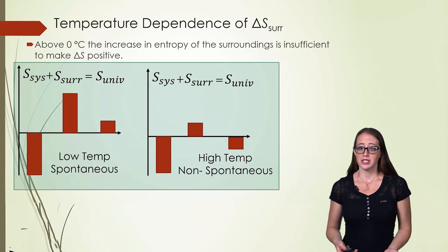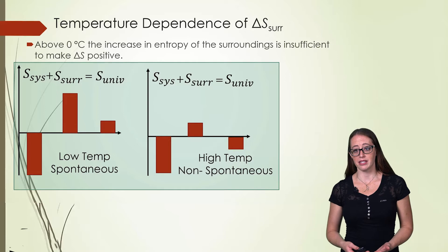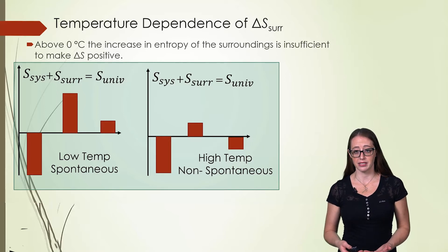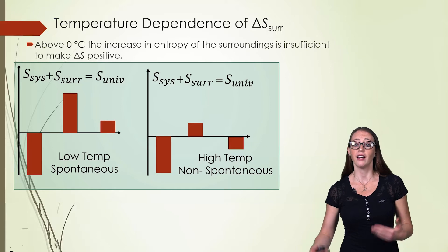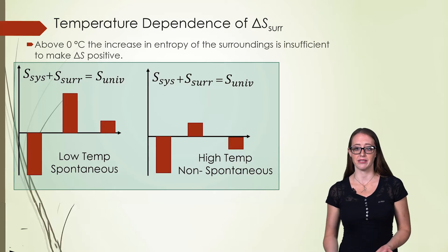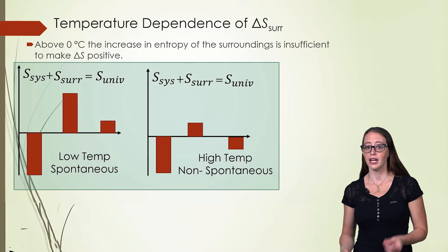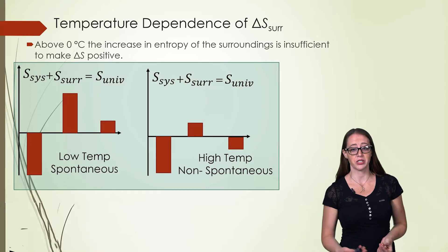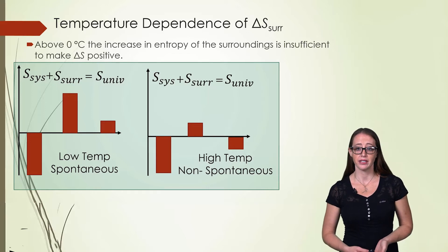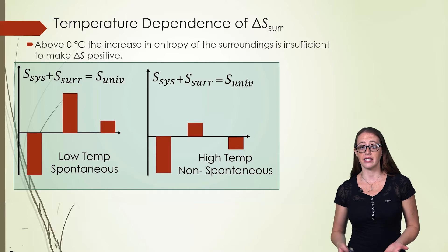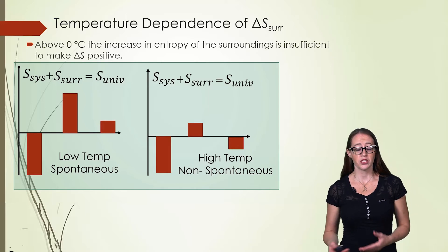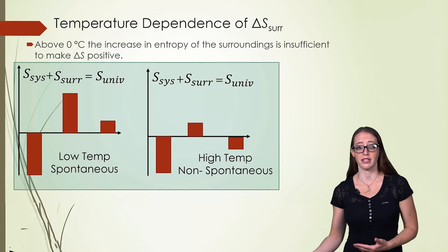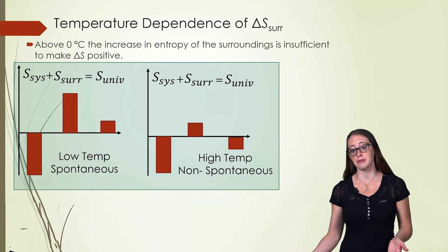Now at low temperatures this is a spontaneous process because the heat released in the process is enough to make the entropy of the surroundings increase enough to counteract the decrease of the system's entropy. However if you move to high temperatures and you look at the high temperature graph, this heat release is not enough to increase the entropy so it doesn't counteract that of the solid forming and the process becomes non-spontaneous.